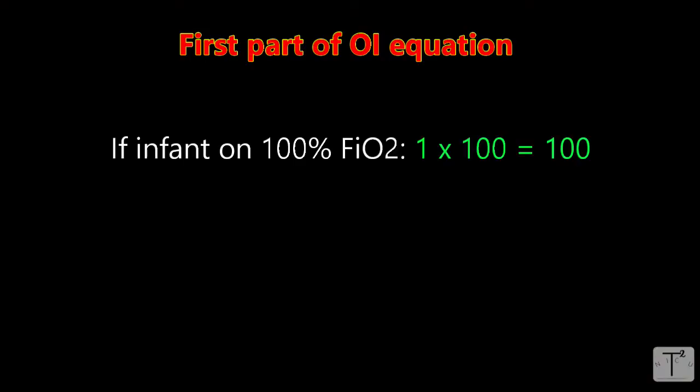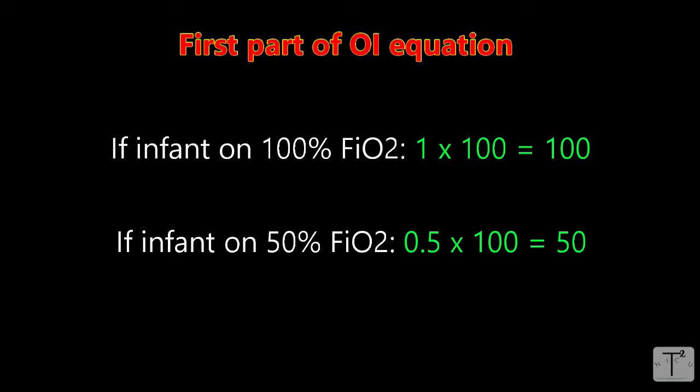In practice, OI is usually calculated when the infant is on 100% oxygen, so the FiO2 portion of the equation is 1 × 100 = 100. If the baby were on 50% FiO2, it would be 0.5 × 100 = 50 — though a baby on 50% FiO2 is probably not sick enough to be worrying about the OI.